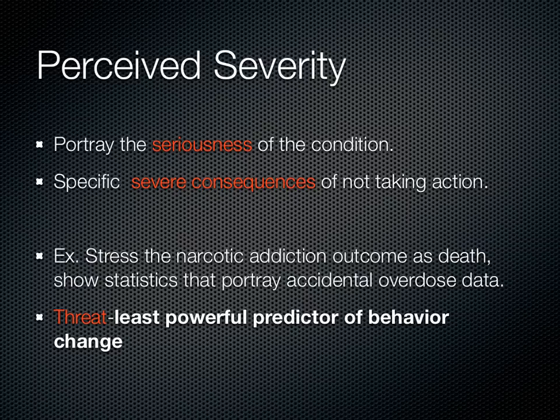Moving on to perceived severity, the second of the threat constructs — this is all about seriousness. With susceptibility we targeted the specific audience and showed they are susceptible to negative outcomes, but with severity we need to express the probability that the outcomes will be severe. This enables quick, fast change. We need to be specific about the severe consequences of not taking action.